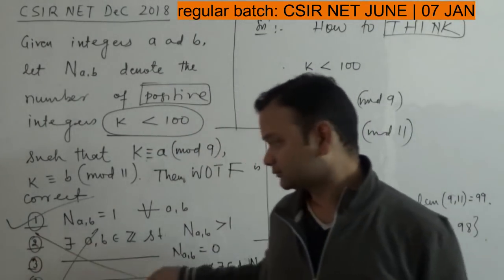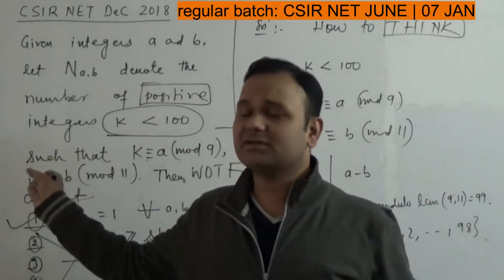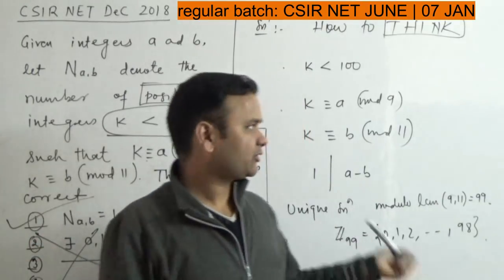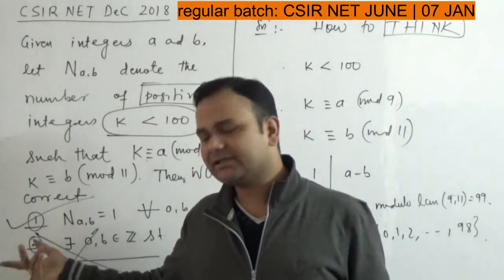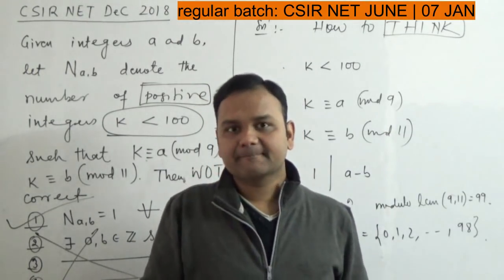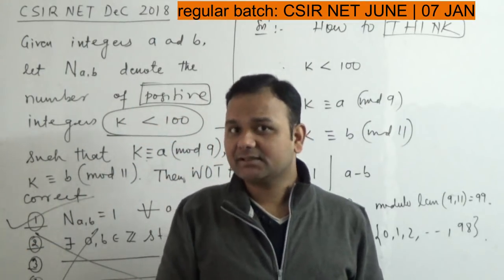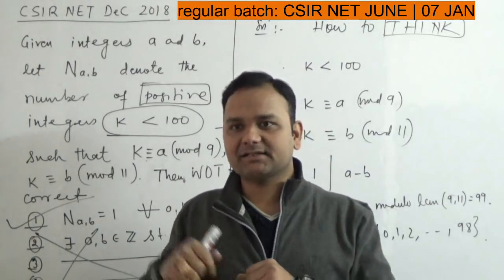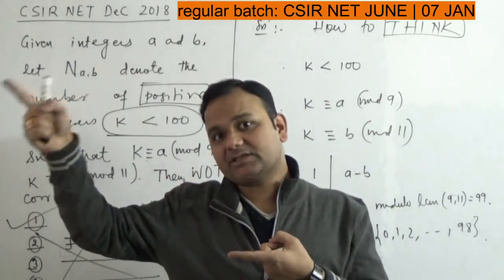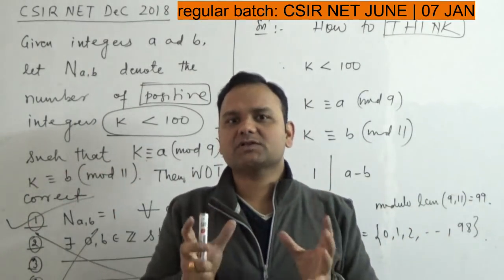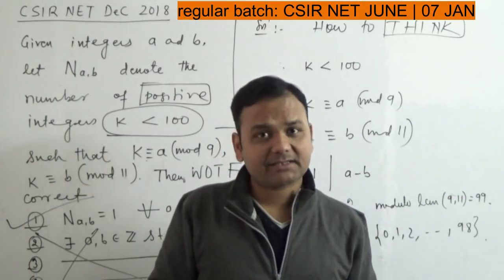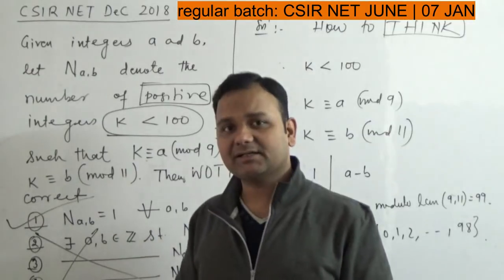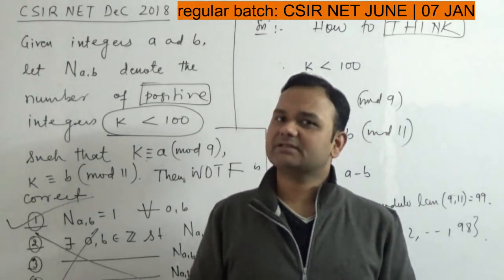So N(a,b) = 1 — I don't need to check the other options. Why look at options 3 and 4 if you know the theory? That is the confidence you need — not overconfidence, but well-founded confidence. You should know very few key facts from real analysis, group theory, and ring theory, collect them together, and do mathematics. That's called mathematics. Thank you for watching my videos — it really means a lot to me.